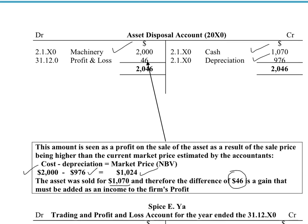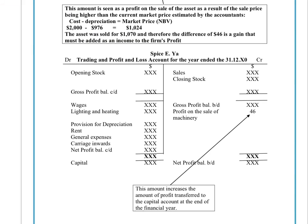That $46 gain would be shown as a profit on the credit side of your profit and loss account — an extra income. We can see it on the credit side written as 'profit on the sale of machinery,' and that $46 is added to the amount of our gross profit balance.